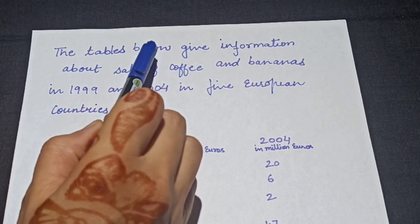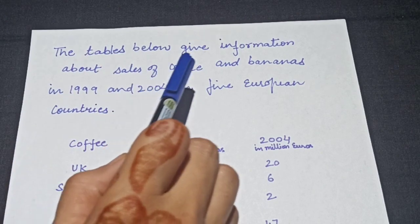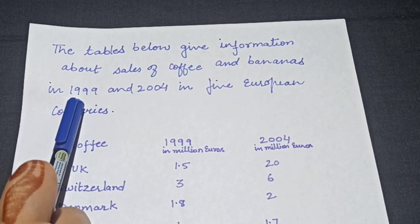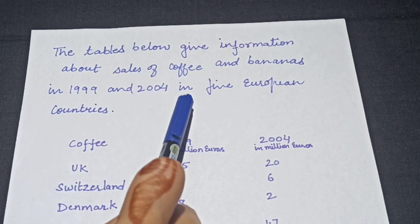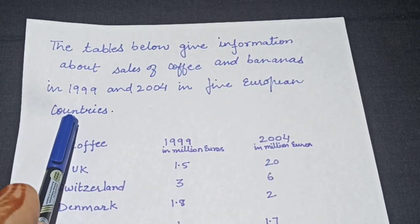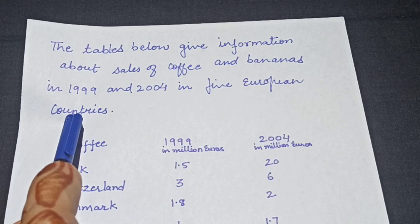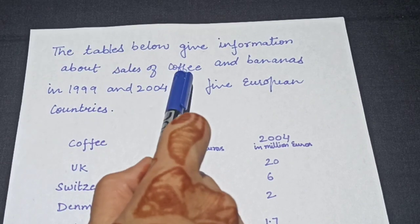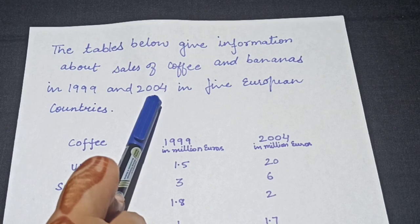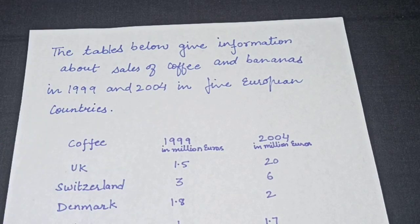The tables below give information about sales of coffee and bananas in 1999 and 2004 in 5 European countries. That means in these tables the information is about the sale of coffee and bananas in two years: 1999 and 2004.